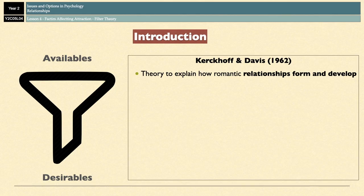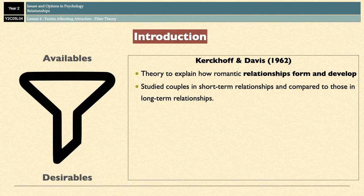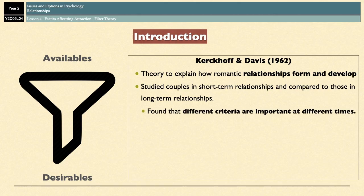Kirkoff and Davis compared the attitudes and personalities of couples in short-term relationships — which they defined as fewer than 18 months — and those in long-term relationships. They discovered several important criteria that people use to choose a partner, some of which are more important in the short-term and others that become more important in the long-term. They called these criteria filters, as they help people to sift through all the potential partners to choose the right one for them.